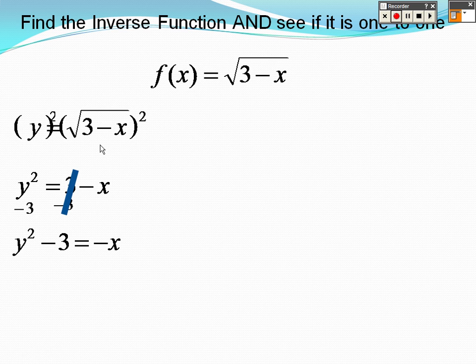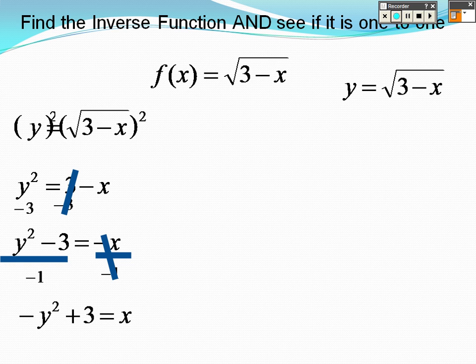Then I would divide by negative 1. So I'd get negative y squared plus 3 equals x. Now I have to see if it's one-to-one.